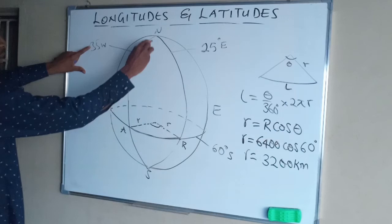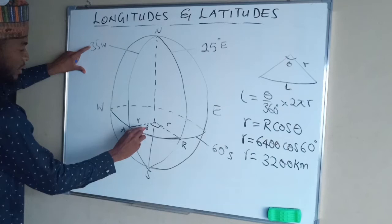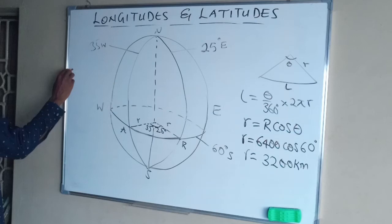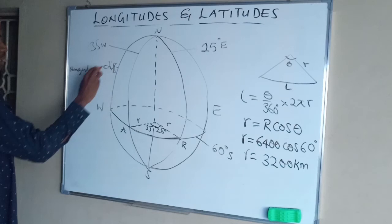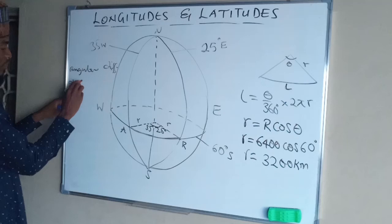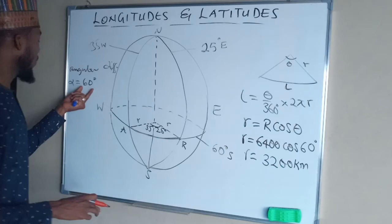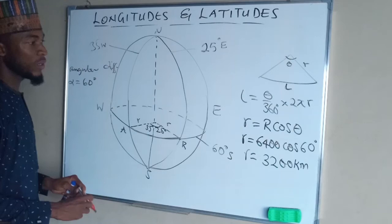Now we need to find the angle subtended by the two longitudes. The first longitude subtends 35 degrees and the other subtends 25 degrees. The total angle subtended is 60 degrees when you add them together. So the angular difference α is 60 degrees. Now that we have obtained the angle subtended by the two longitudes and found our small r, we can substitute into the formula to find the distance between town A and town B.